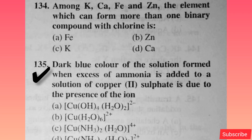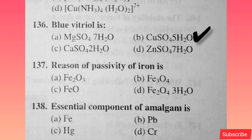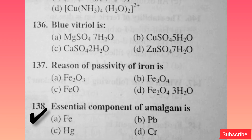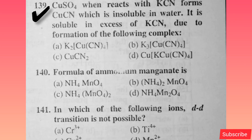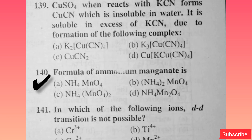Dark blue color of the solution formed when excess ammonia is added to copper sulphate solution is due to the presence of the ion — option B is correct. Blue vitriol is — option B is correct. The reason for passivity of iron is — option B is correct. Essential components of amalgam are — option C is correct. CuSO4 reacts with cyanide forming CuSCN which is insoluble in water; it is soluble in excess cyanide due to complex formation — option B is correct. Formula of ammonium molybdate is — option B is correct.